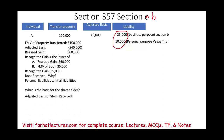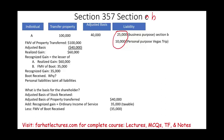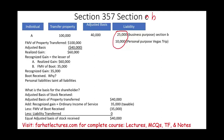What is the basis for the shareholder under Section 357B Rule 2? Start with adjusted basis: $40,000. Add recognized gain: $35,000. Subtract fair market value of boot received: $35,000. There is no liability transferred because all liability is considered boot. Therefore, the adjusted basis of the stock is $40,000. The boot received and the taxes paid cancel each other out, yielding the same $40,000 basis. This is Section 357B Rule 2.